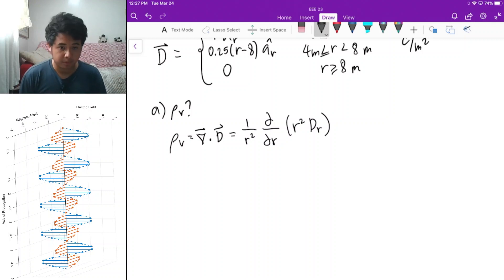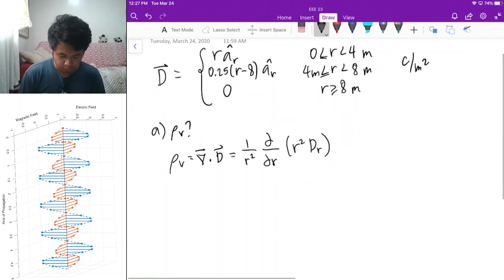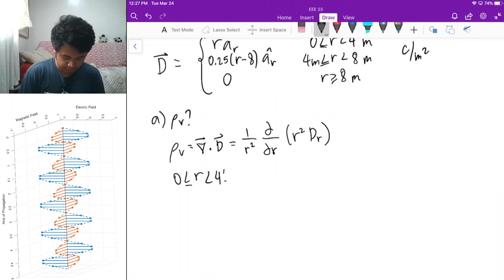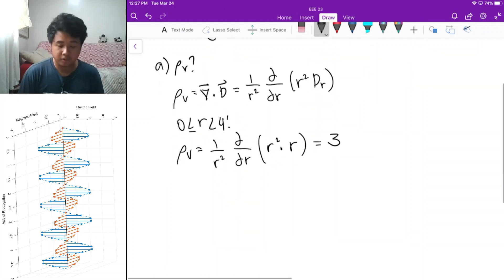This is the formula for the divergence. Using this for 0 is less than or equal to r less than 4 meters, we're solving for the derivative of the flux density of r squared times r a r hat, the r component of your electric flux density. On solving this, you'll get that the divergence is equal to 3.